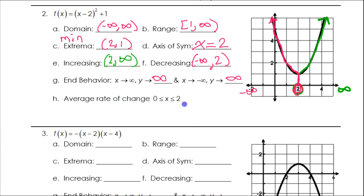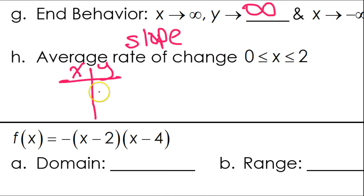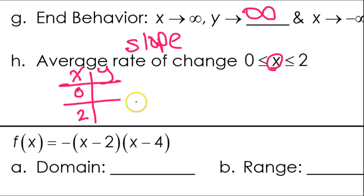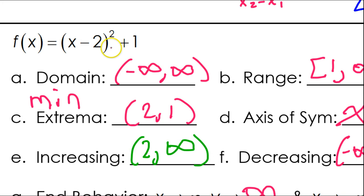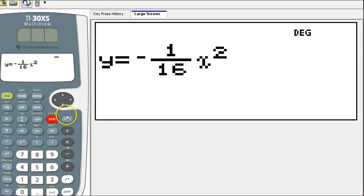Average rate of change is just going to be the slope. So let's set up a table of values with x's and y's. We want x values from 0 to 2 — so 0 and 2 are the beginning and end x values. We need the y values that go with these x values. To get those, we can use the equation they gave us. I'm going to use the table feature of the calculator — the TI-30XS MultiView. Type in (x minus 2) squared plus 1.